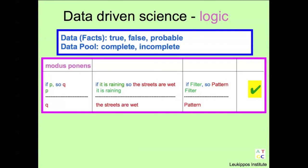The logical form used in this method is called modus ponens. We know if p, so q. We observe p and we conclude q is correct. This conclusion is correct.